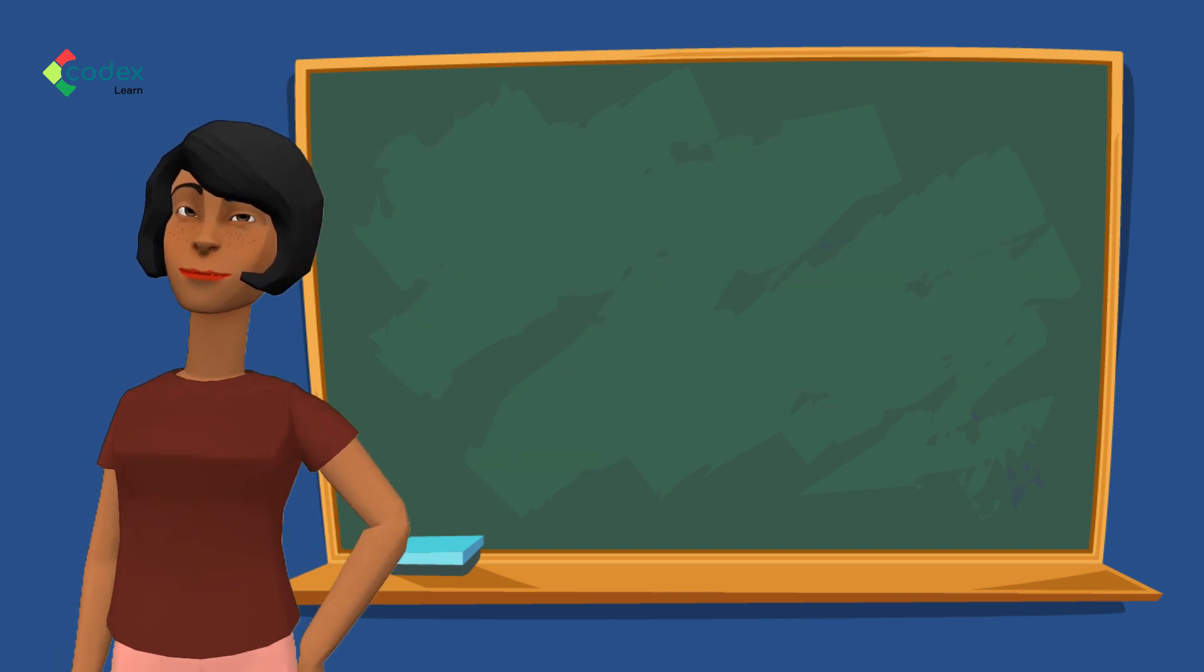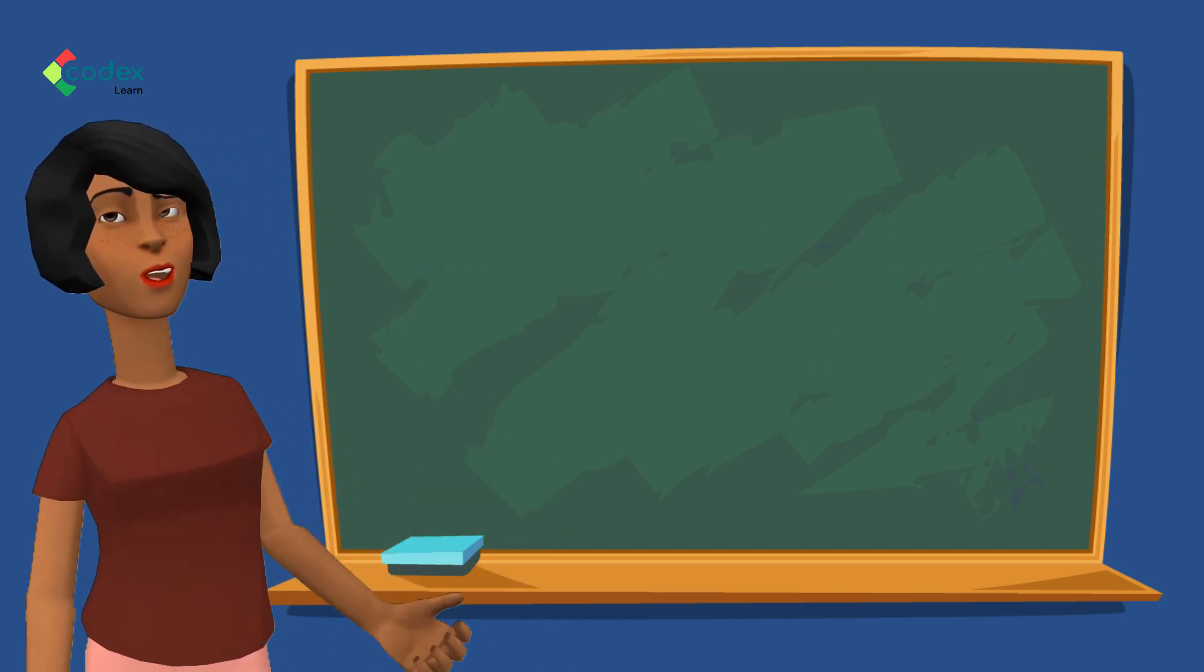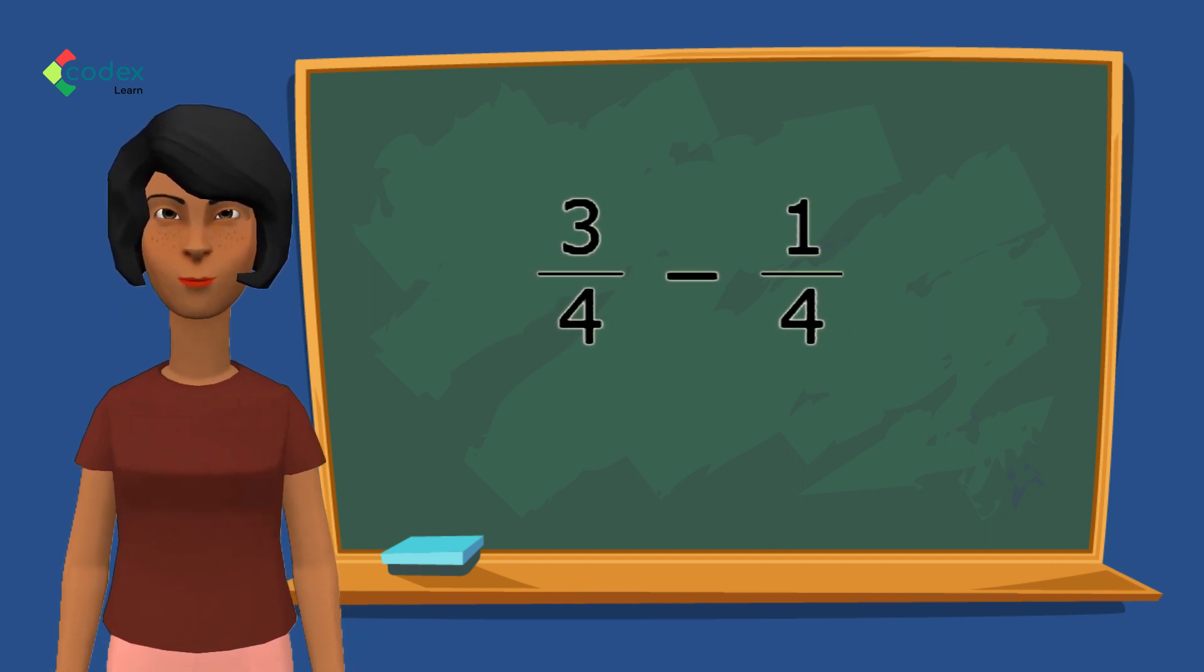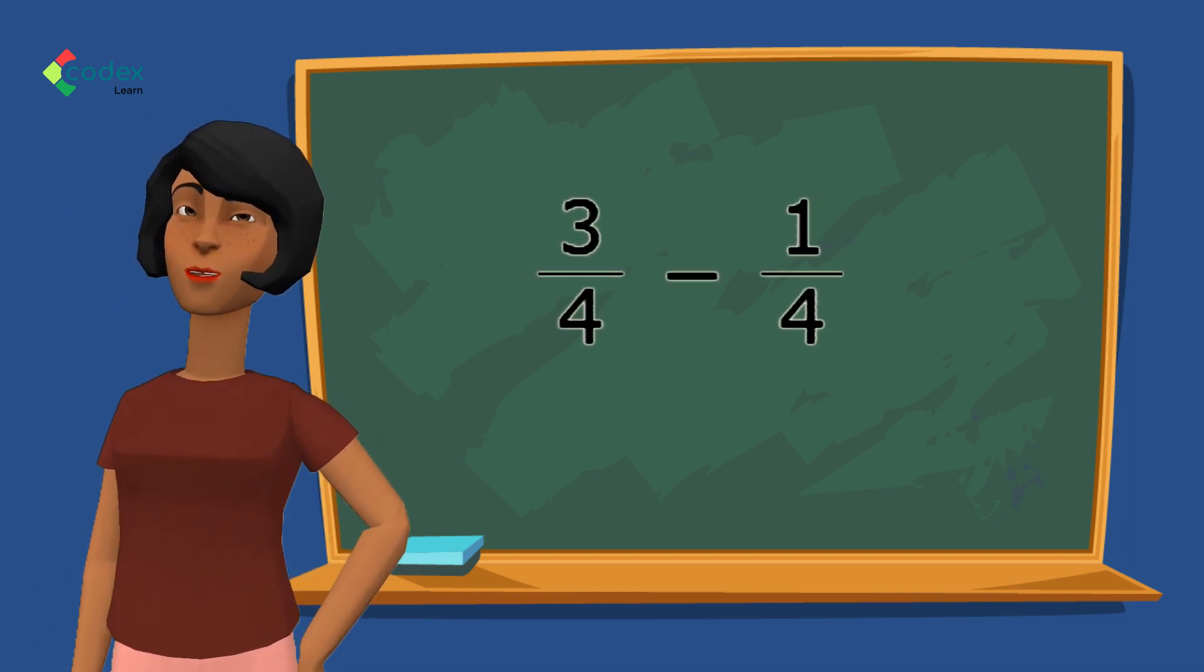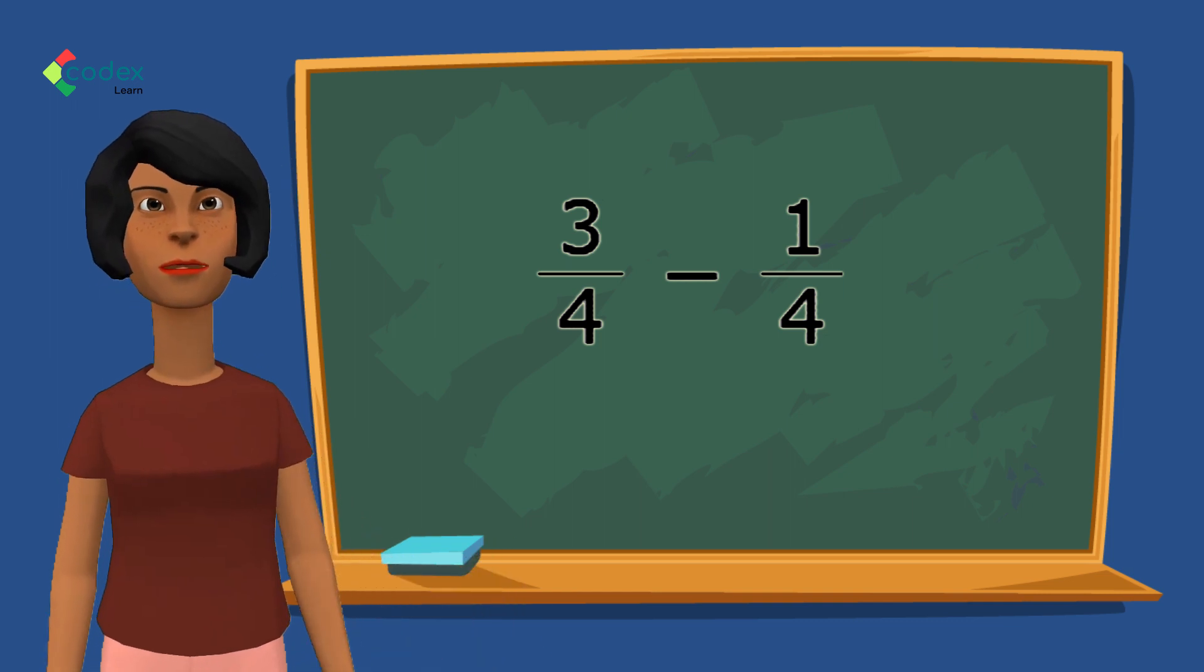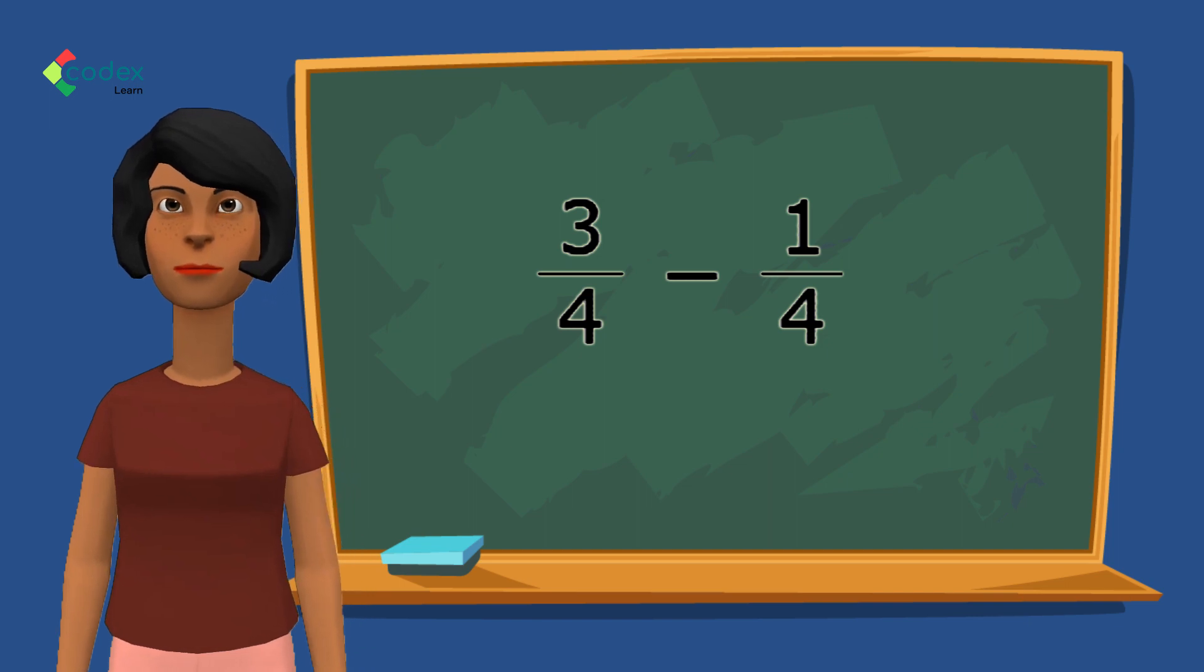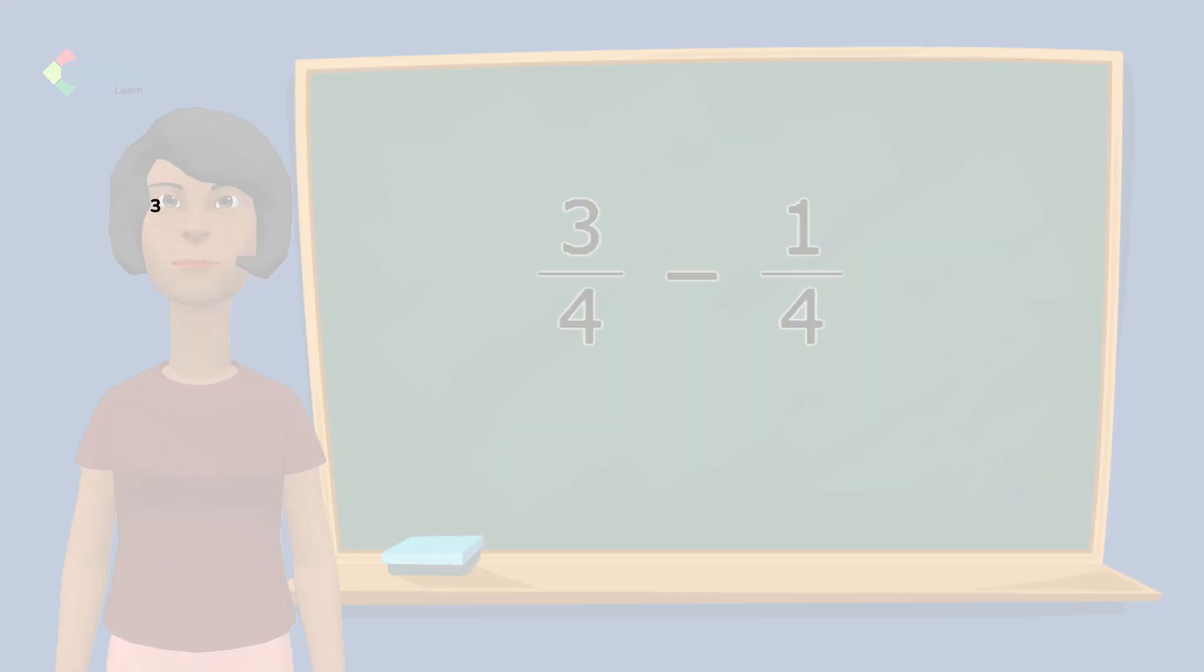A simple example is when the denominators are already the same, like this: three over four minus one over four. Shall we apply the steps to find the right answer to this question? Right, let's do this. Three over four minus one over four.